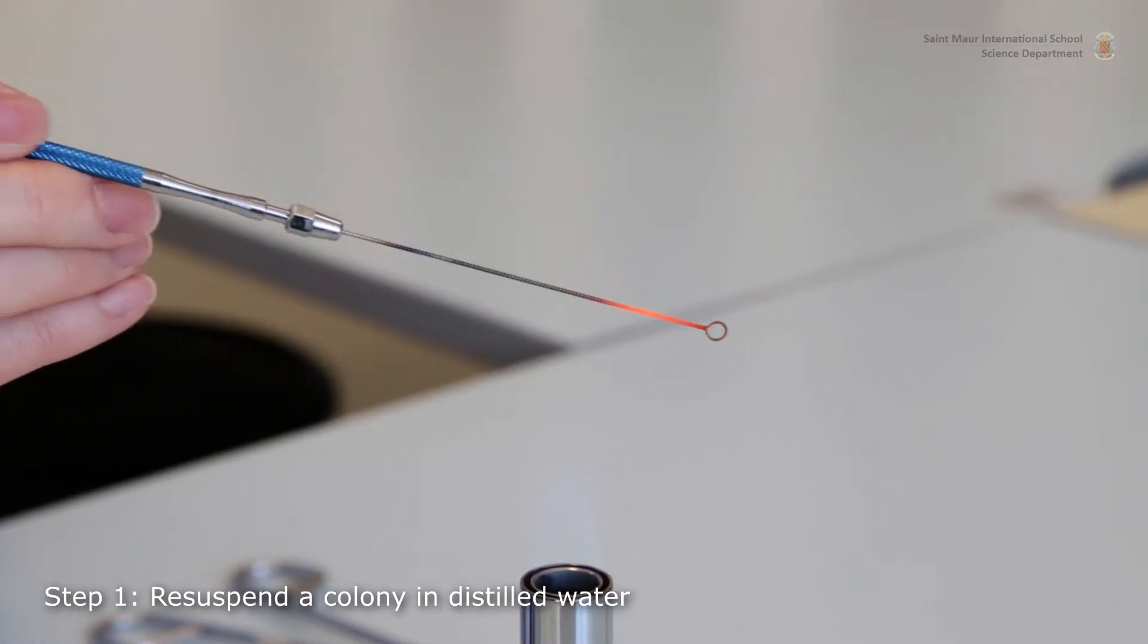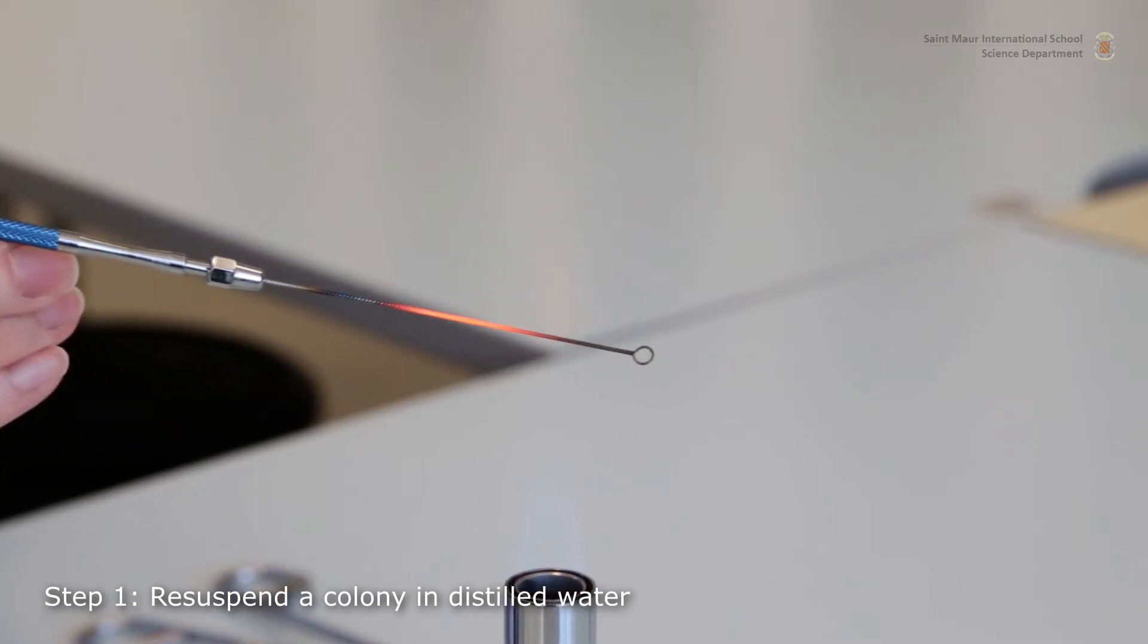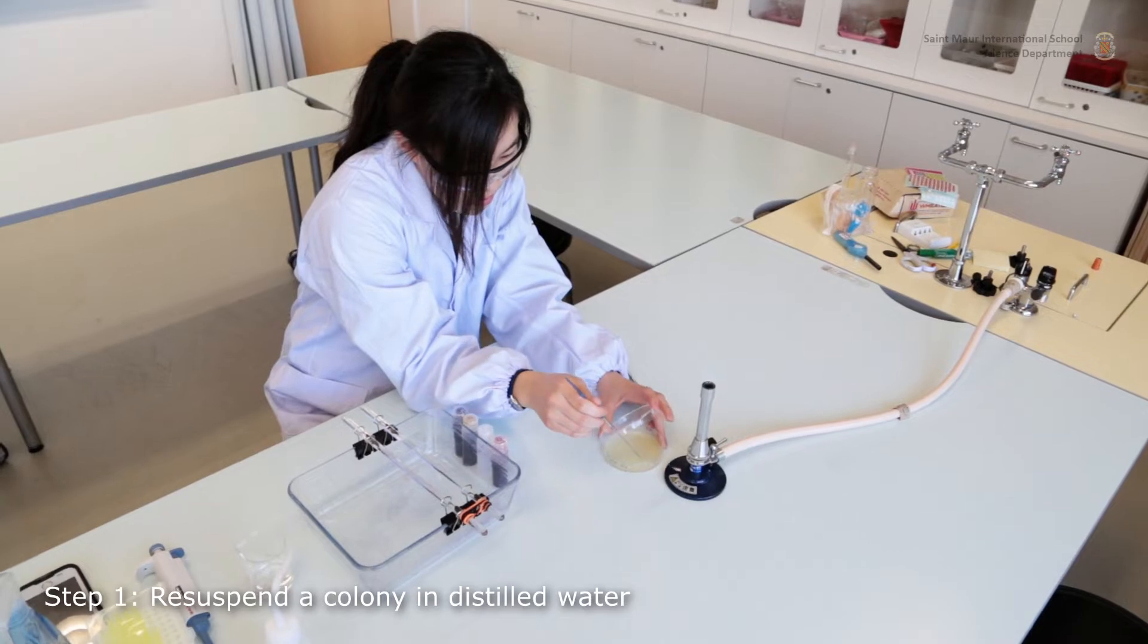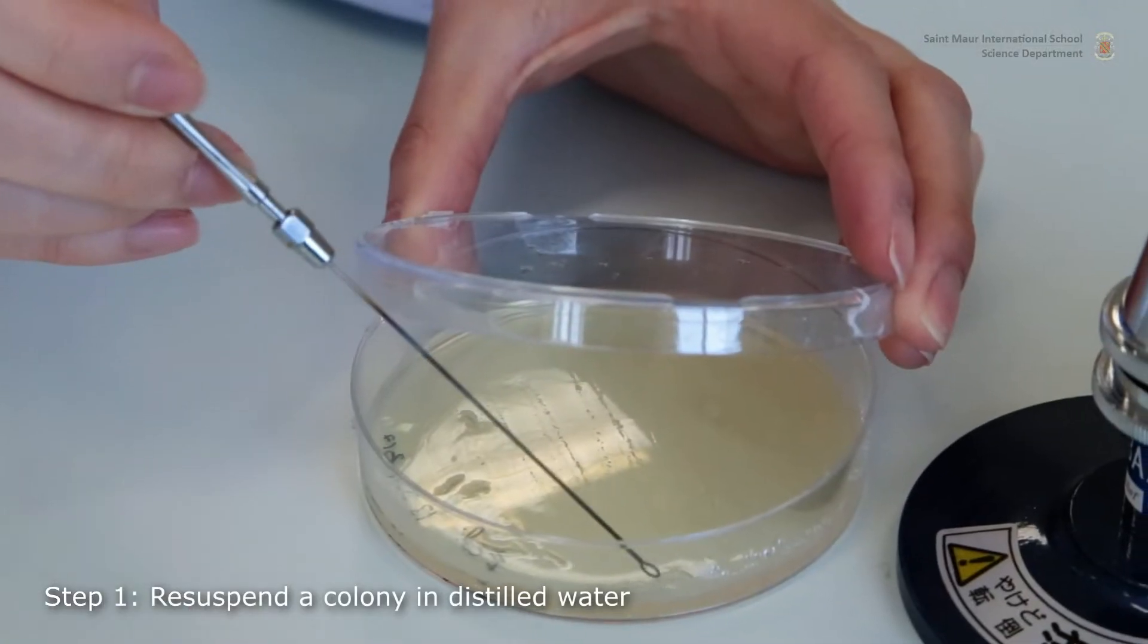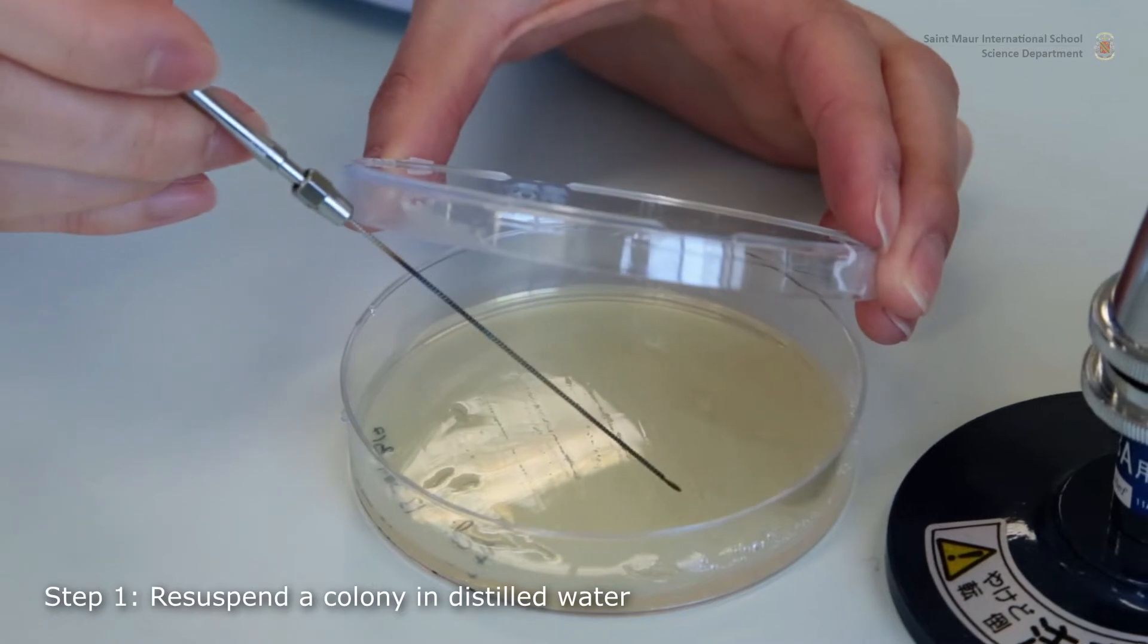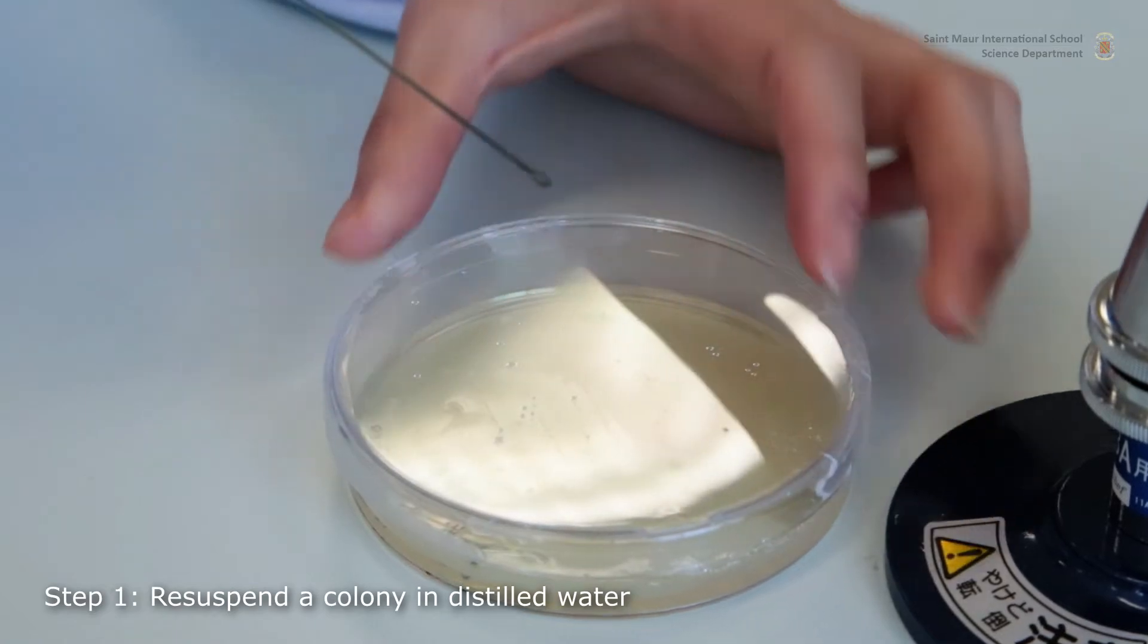Following staining, Gram-positive bacteria will be colored in purple, while Gram-negative bacteria will appear pink. This difference is due to the Gram-negative bacteria's thinner layer of peptidoglycan, which will lose the purple color during destaining, hence being able to display the lighter pink color of the counterstain.